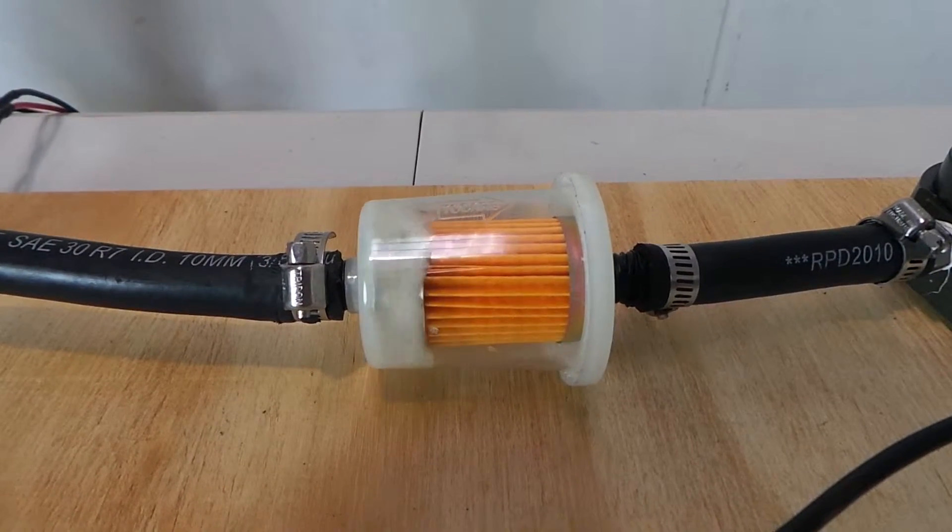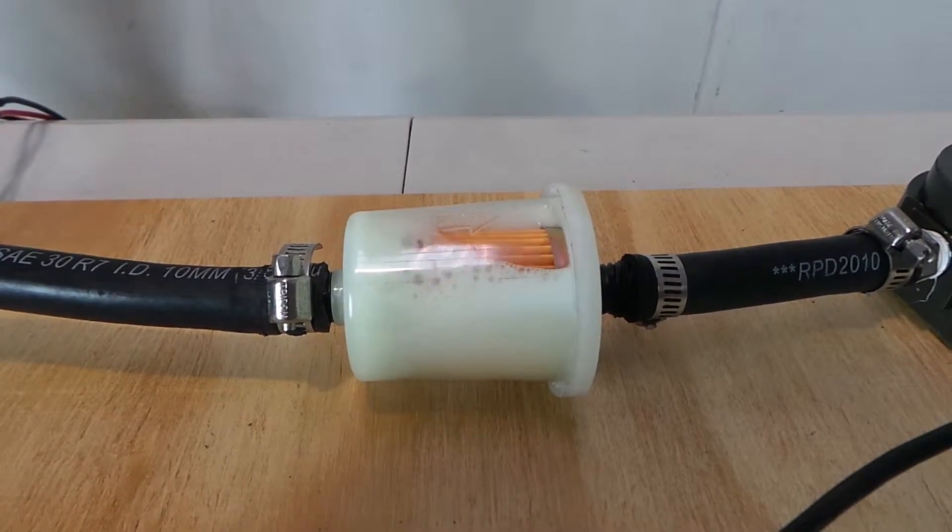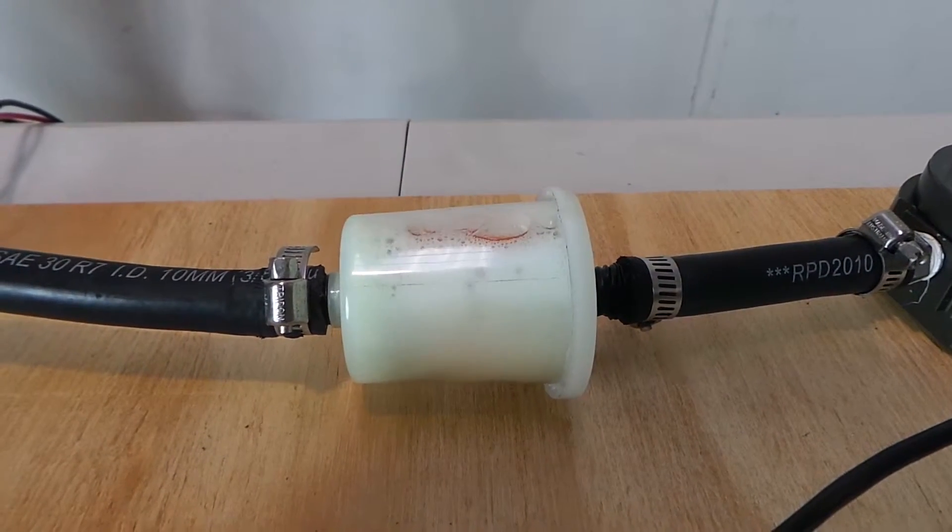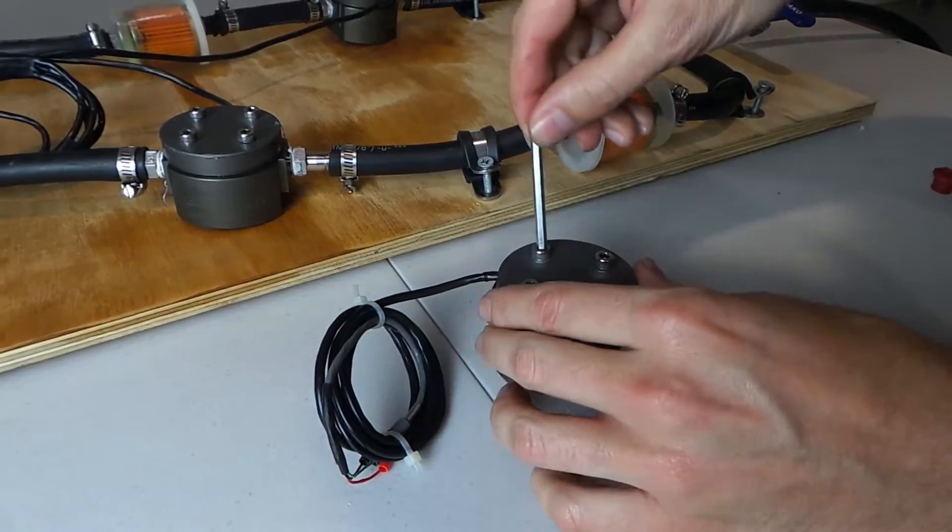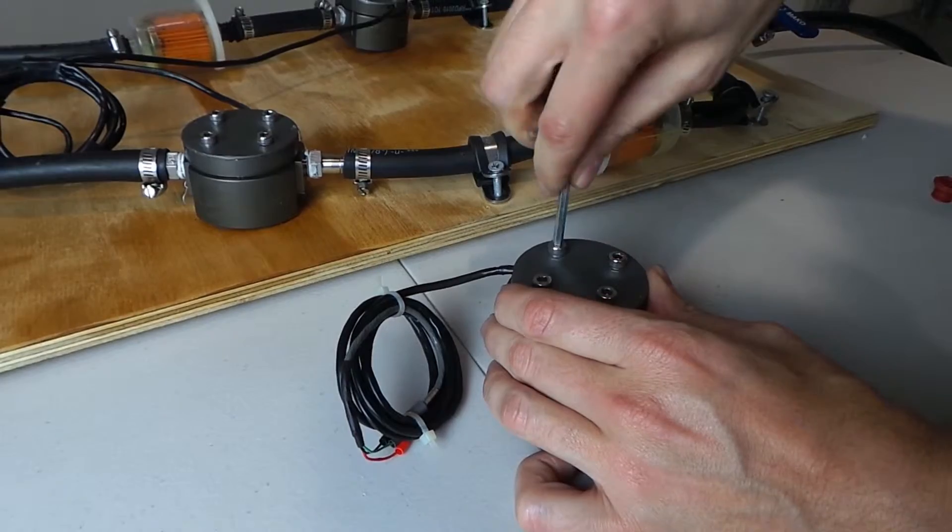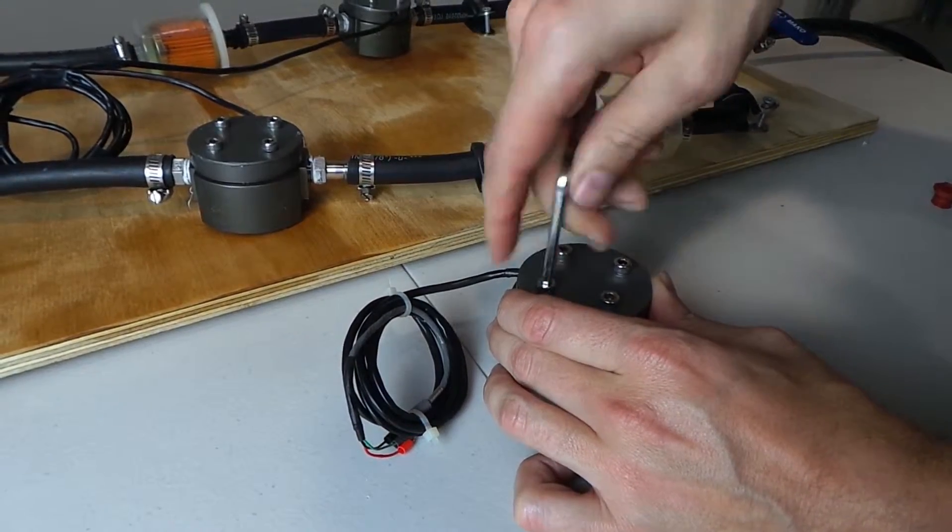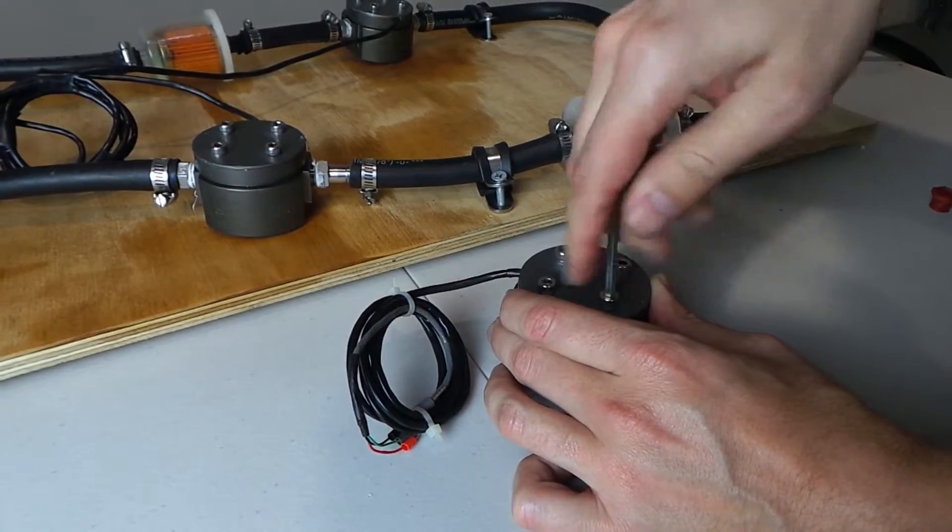If the readings are still not accurate, you will need to ensure that the air is bled from the system. As per the instructions, the pulse meter should be placed at the highest point in the system. By releasing the bolts on the pulse meters with the system running, the air should slowly bleed from the system.